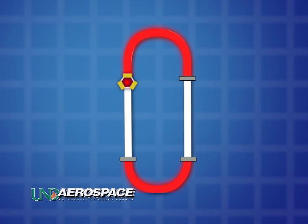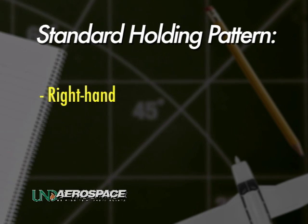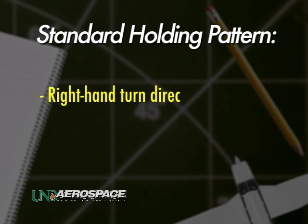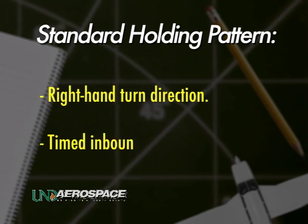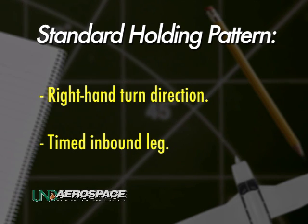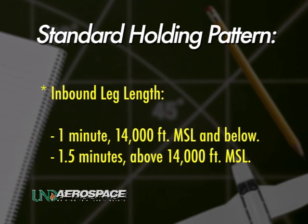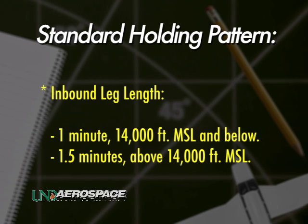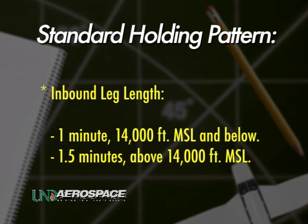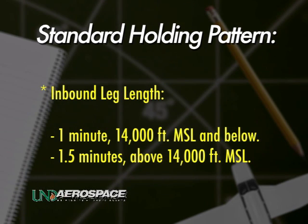Unlike a VFR traffic pattern, a standard holding pattern is one with a right-hand turn direction and includes a timed inbound leg. In a standard holding pattern, the inbound leg is one minute long at 14,000 feet and below, and one and a half minutes long above 14,000 feet.